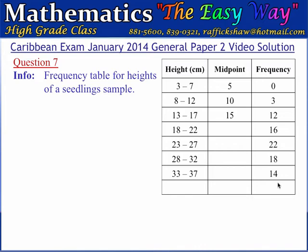To find the total number of seedlings in the sample, we simply take the sum of all frequency values. We also have the class midpoints shown. The class midpoint for the first class is 5, which can be calculated by taking the average of the limit values, but theoretically it must be calculated using the average of the boundary values.